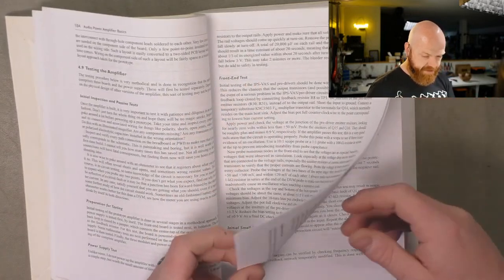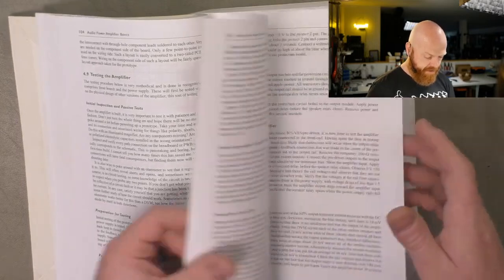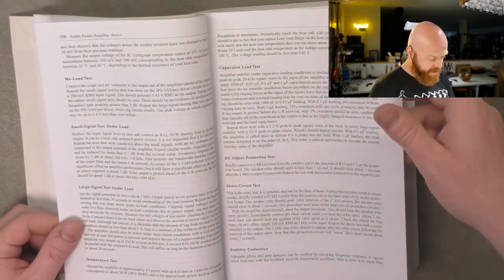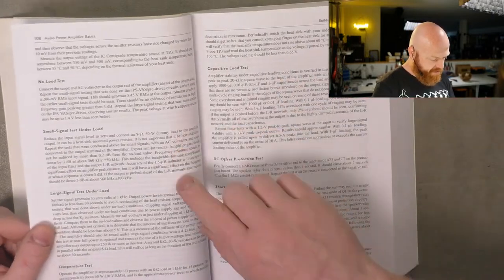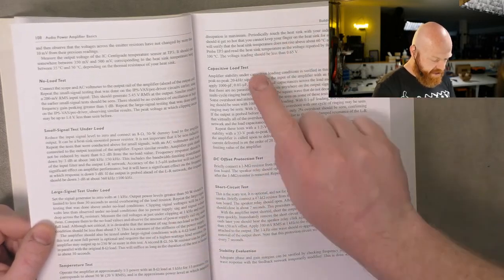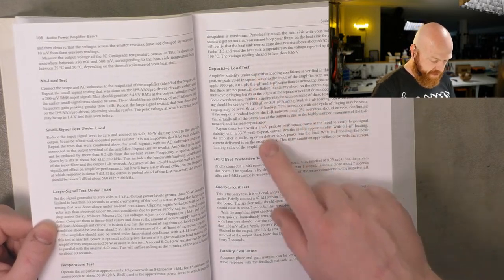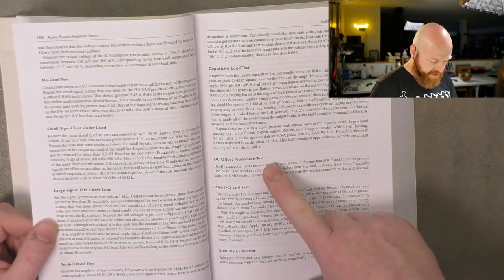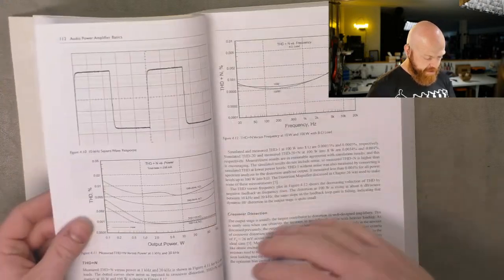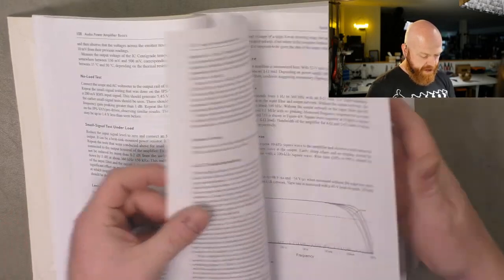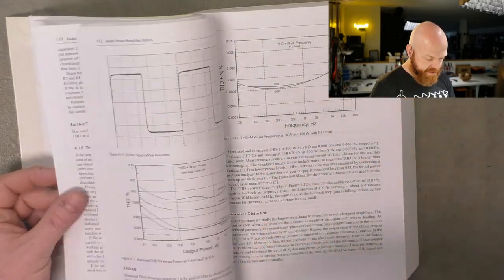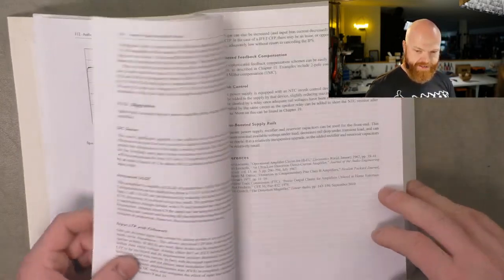So he tests all the separate sections independently. Until the ass clenching moment where you fire the thing up. Test it with no load. Small signal test under load. Large signal test under load. Temperature stability test. Capacitive load test, which can be where a lot of amps fall over. Or oscillate or do all sorts of weird shit. DC offset, DC offset protection test. Short circuit test. So that's how you actually design an amp. Rather than just following a schematic and just hoping it works. Which is where I was at before I had this book.